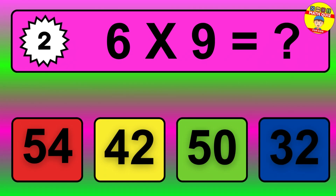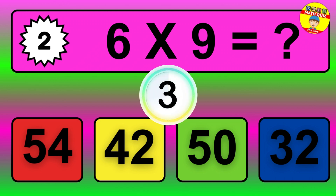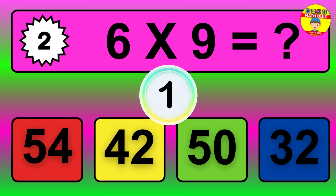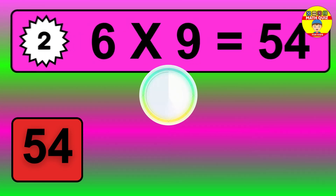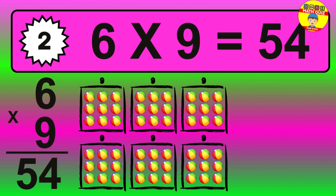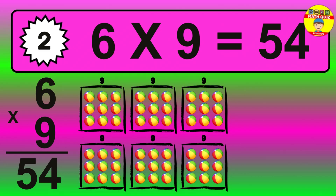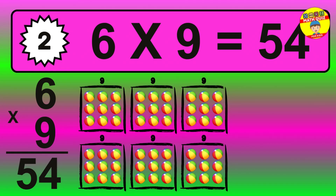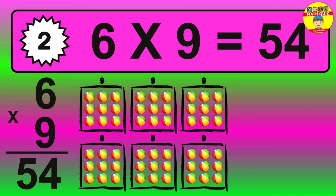Question 2. 6 times 9 equals what? The answer is 6 times 9 is 54. To calculate, we have 6 groups with 9 balls each one. So, how many balls do we have? 54 balls.